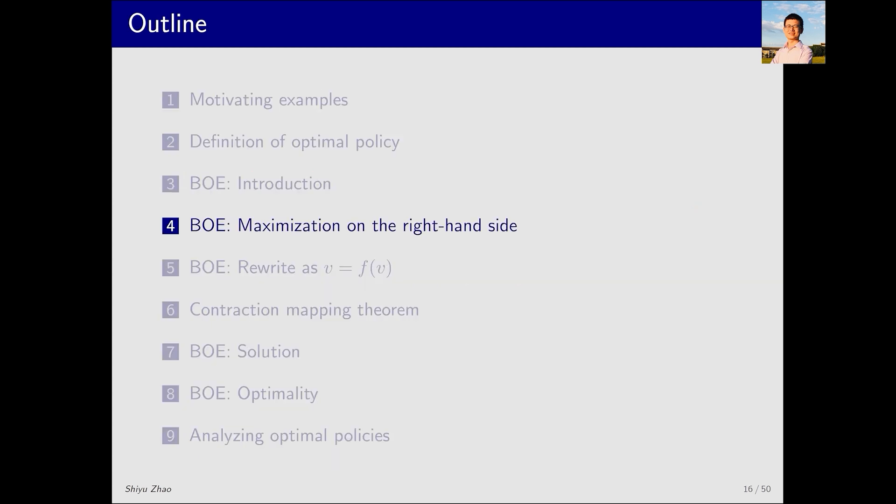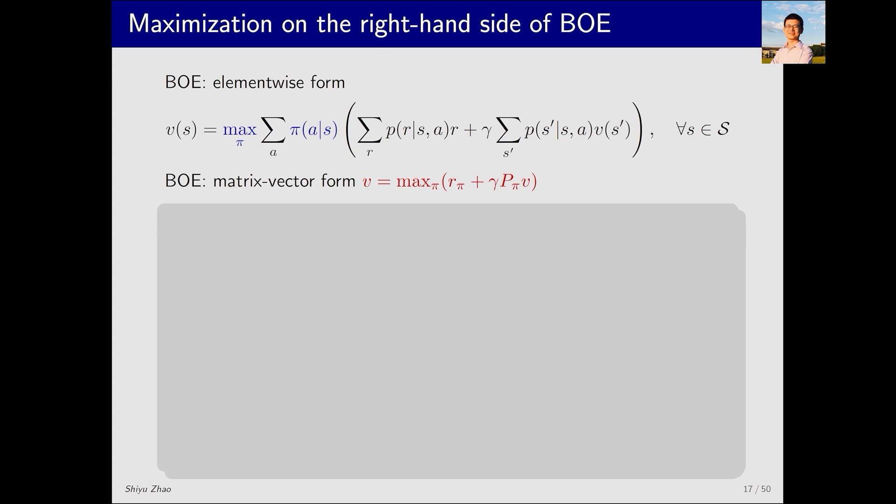We've just provided the expression for the Bellman optimality equation. Now let's delve into a detailed analysis of this equation. The first aspect I'll discuss may be confusing, the maximization on the right-hand side. Specifically, this is the element-wise form of the Bellman optimality equation and this is its matrix vector form. As we can see, there is a maximization on the right-hand side, which might be confusing to beginners.